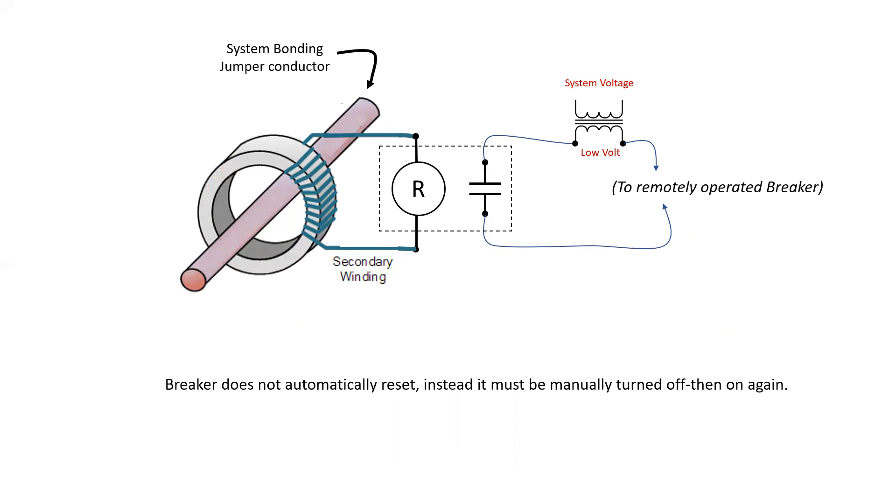It's important to understand that the breaker does not automatically reset after the ground fault is removed. Instead, it must be manually turned all the way off and all the way back on.